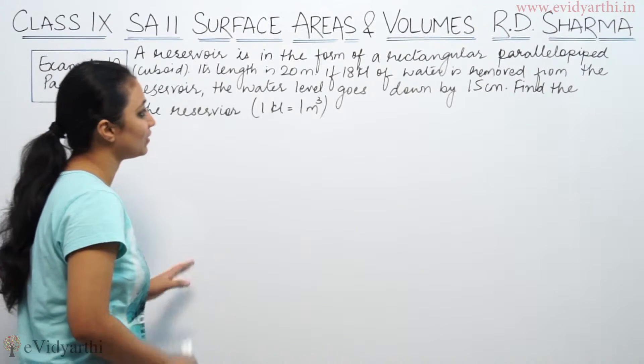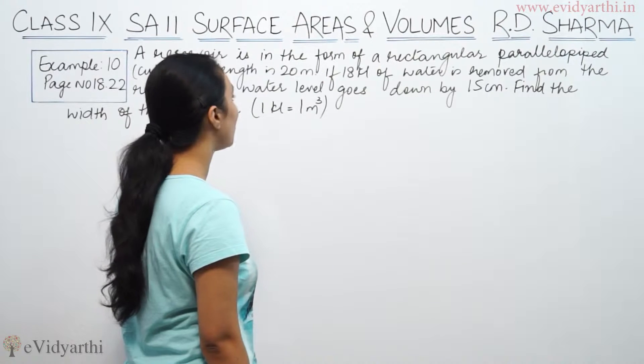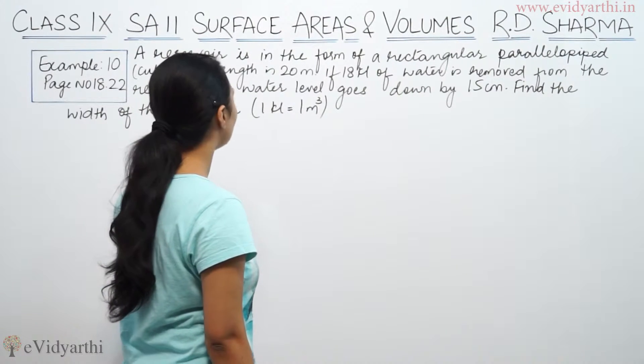Its length is 20 meters. If 18 kiloliters of water is removed from the reservoir, the water level goes down by 15 centimeters. Find the width of the reservoir.